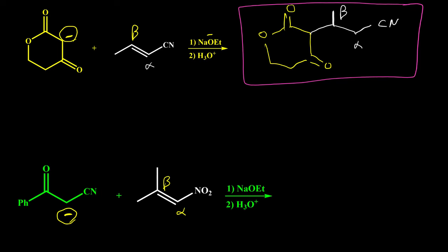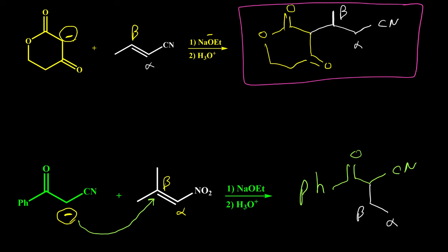For the second reaction: the negative carbon attaches to the beta position. The beta carbon then attaches to the alpha carbon, which attaches to the NO2 group. The beta carbon also has two methyl groups, so this beta carbon should have two methyl groups. Here is the structure for the second product.